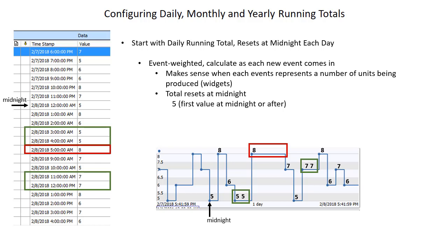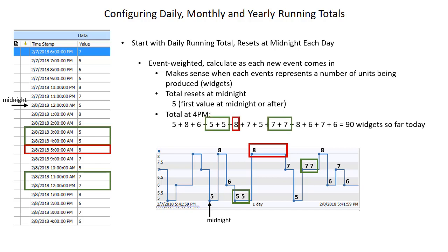Our total is going to reset at midnight, so 5 is our first value that comes in right at midnight. The total at 4 PM would look something like this. Notice that the two values of 5 are each included in our calculation, but even though we have a value of 8 for 4 hours, since it's event-weighted and not time-weighted, it only gets counted once. So we have a total of 90 widgets so far today.